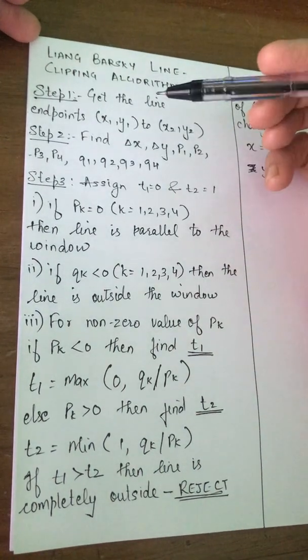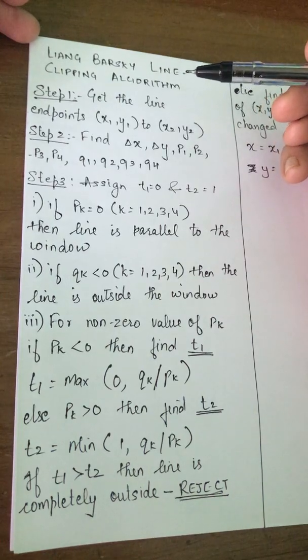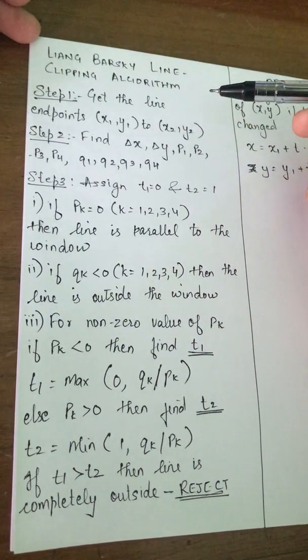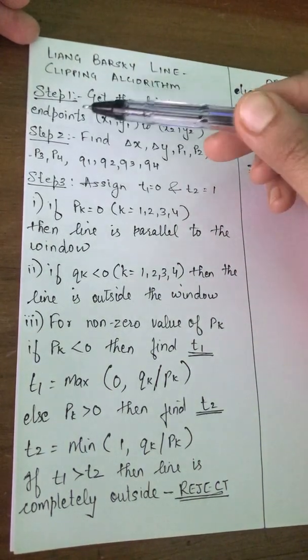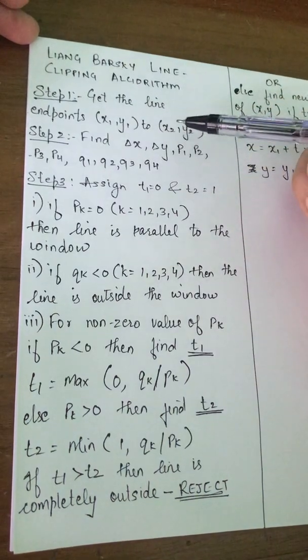The first step is, as it was in the previous algorithm, you have to get the endpoints of the line. You have to get the endpoints x1, y1 to x2, y2.